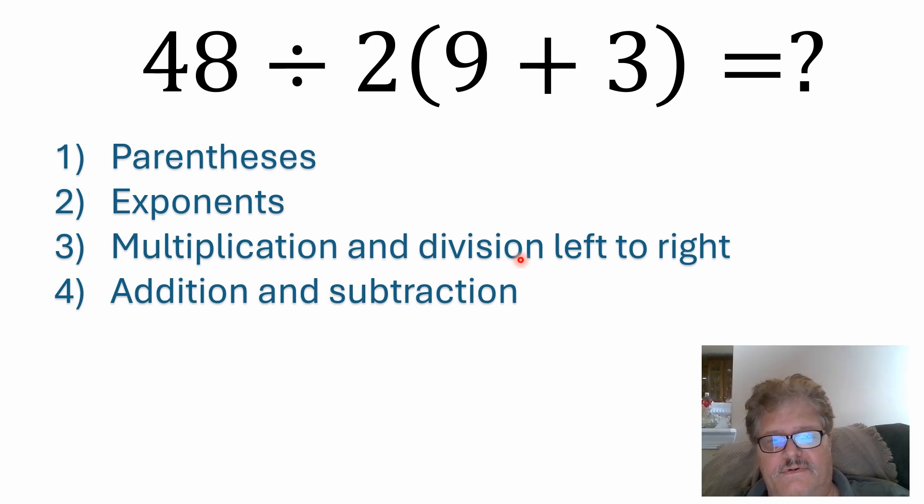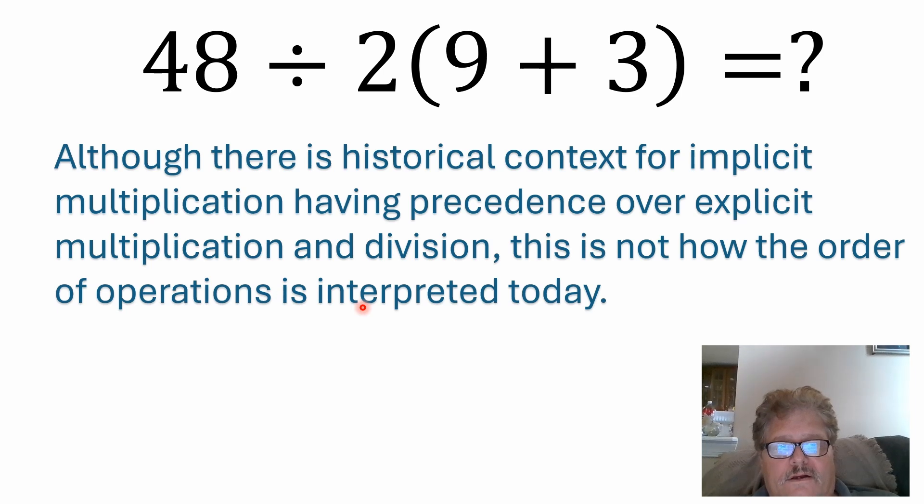Now, we're going to talk a little bit about implicit multiplication, which is really probably the biggest reason that makes this problem viral. And then finally, we have addition and subtraction as the fourth step. Just remember, subtraction is just adding a negative number. Alright, so we've got a couple things going on.